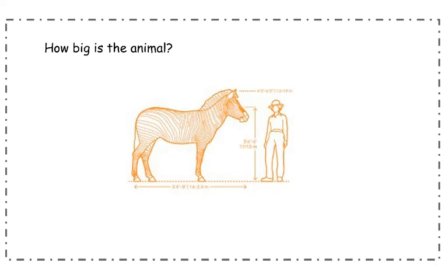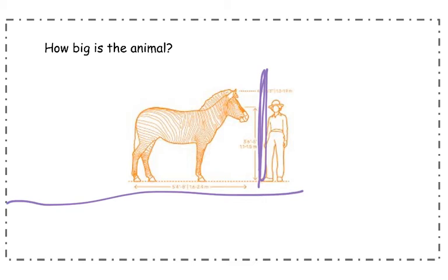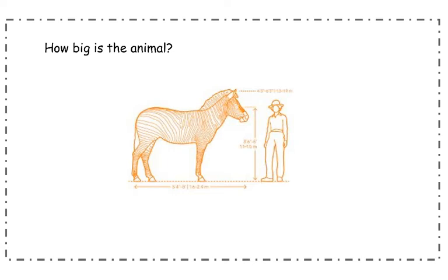The first question is, how big is the animal? When we're thinking about this question, we want to know how tall the animal is. Sometimes how long an animal is important as well. This picture shows you how tall a zebra is compared to a person — this zebra is a little bit taller than a person.